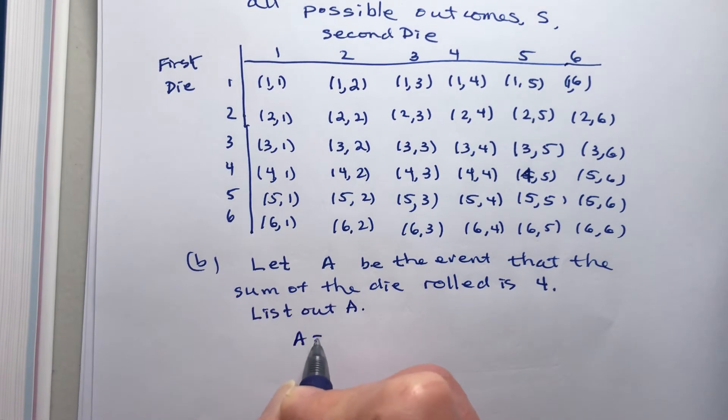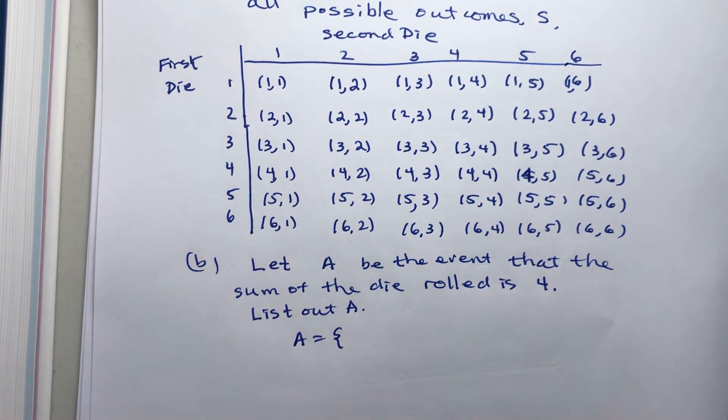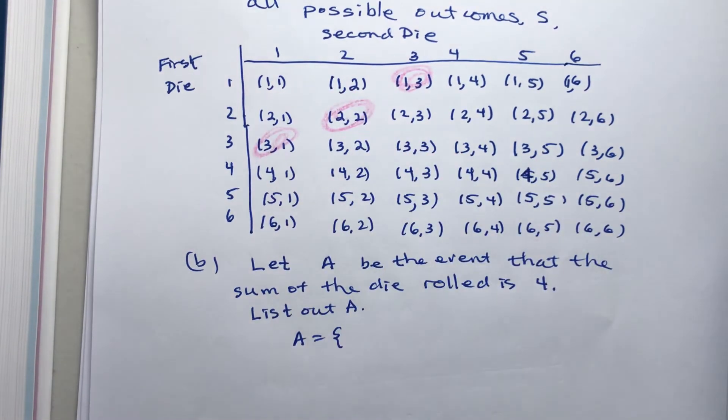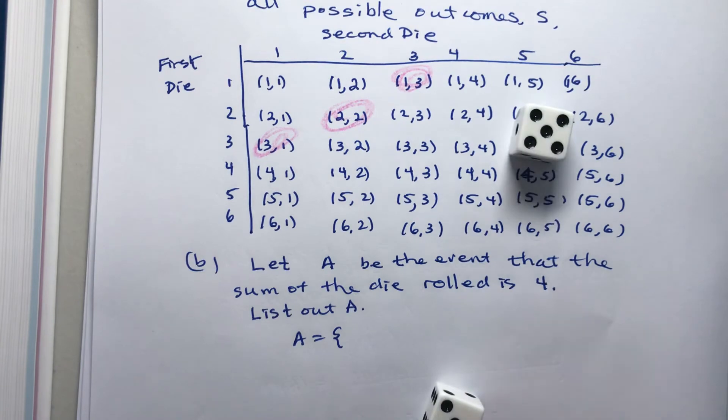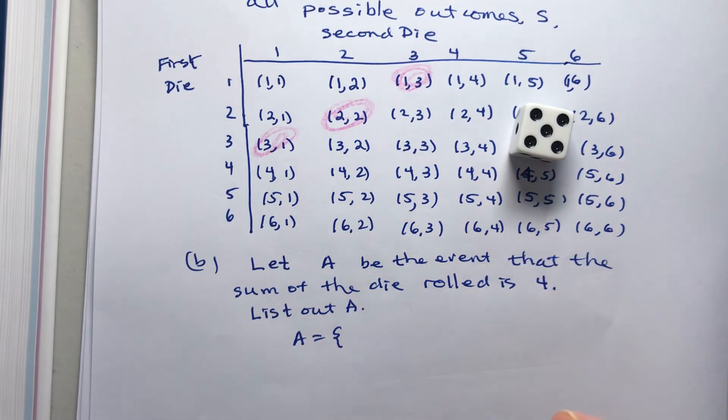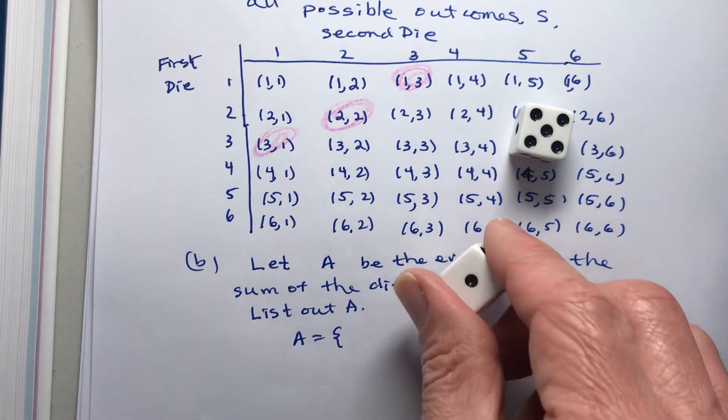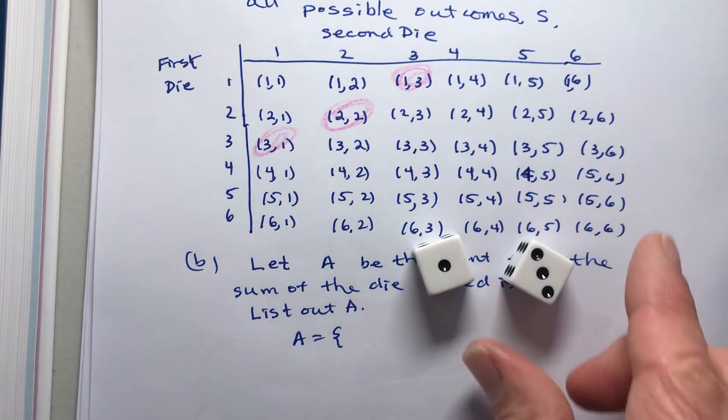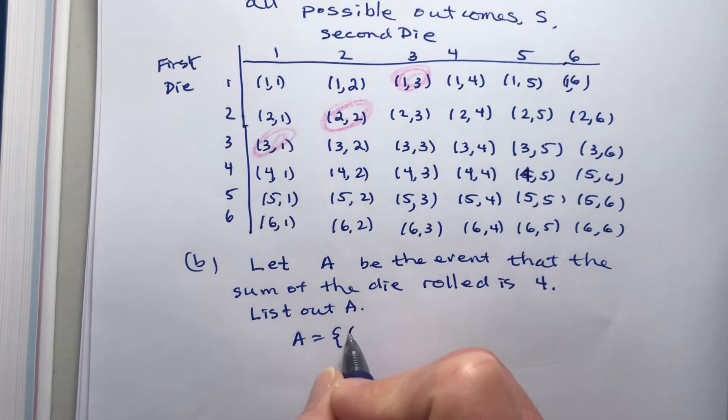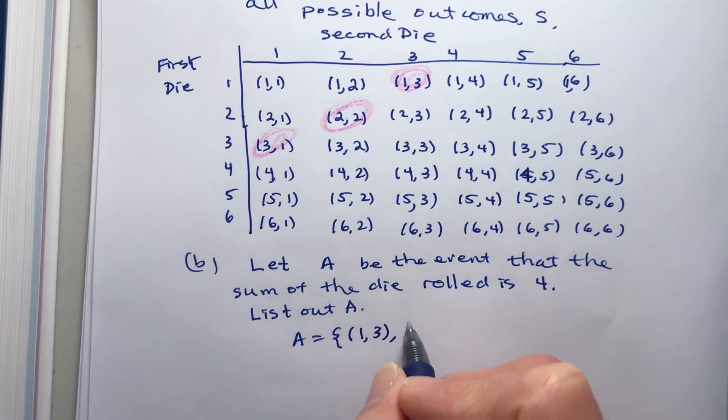So let A be the event that the sum of the dice rolled is four. It's going to consist of those events when you roll the dice and you get four. So (1,3), (2,2), (3,1). Those will all give us four. So what I mean is I roll the die. In this case, I got a three and a five. I add those up and I get eight. So we're looking at, say, roll one and roll three. That's going to give us four. That's one way we can get four.